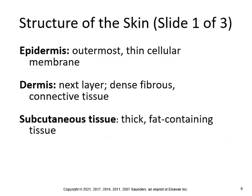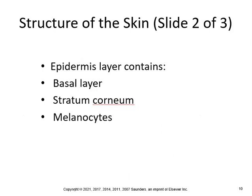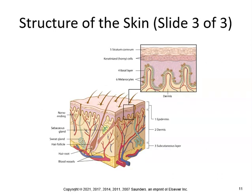You should know the three layers for sure: the epidermis, which is the outermost thin cellular membrane; the dermis, which is the next layer of dense fibrous connective tissue — to put this in perspective, your tattoo is in the dermis, while a henna tattoo is in the epidermis, meaning it washes away in 7 to 10 days; and then subcutaneous tissue, which is basically the fat-containing tissue. The epidermis layer contains the basal layer, the stratum corneum, and melanocytes.